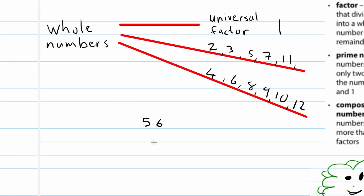I'll use a factor tree to divide 56 into its prime factors. The approach is to ask: which is the lowest prime number that can divide 56? We try 2 — yes, 56 is divisible by 2. We write down 2, and after dividing, the number becomes 28.